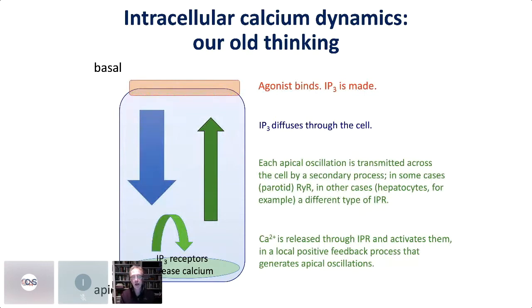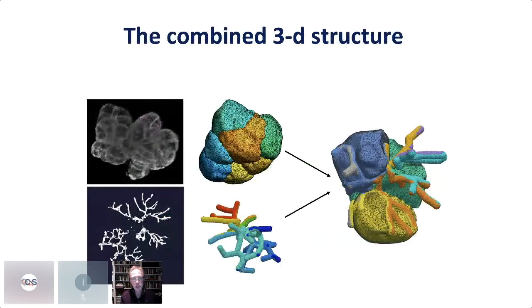The calcium wave initiates in the apical region and propagates backwards through the cell to the basolateral region. In old models it activates PLC to make more IP3, creating a positive feedback loop resulting in sequential calcium waves — which is what you see experimentally in isolated cells and isolated glands. Sean Means, Evo, and Pinging were closely involved in the IP3 receptor models and construction of these computational approaches.